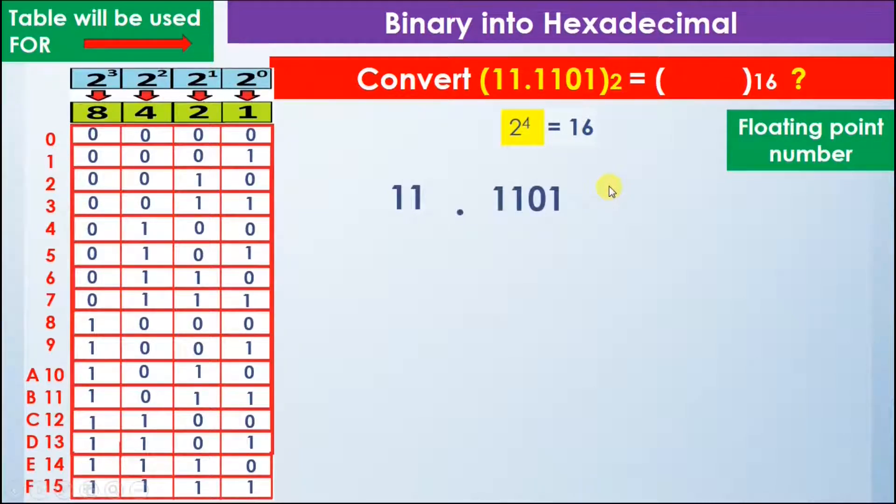In this case we will move from right to left, moving away from the decimal point. And on this side, while moving away from the decimal point, we are moving from left to right. This is how we can make groups of four bits.